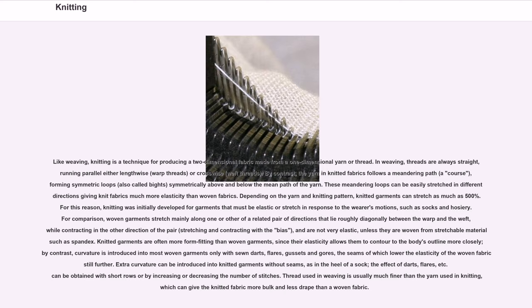By contrast, curvature is introduced into most woven garments only with sewn darts, flares, gussets and gores, the seams of which lower the elasticity of the woven fabrics still further. Extra curvature can be introduced into knitted garments without seams, as in the heel of a sock; the effect of darts, flares, etc. can be obtained with short rows or by increasing or decreasing the number of stitches.